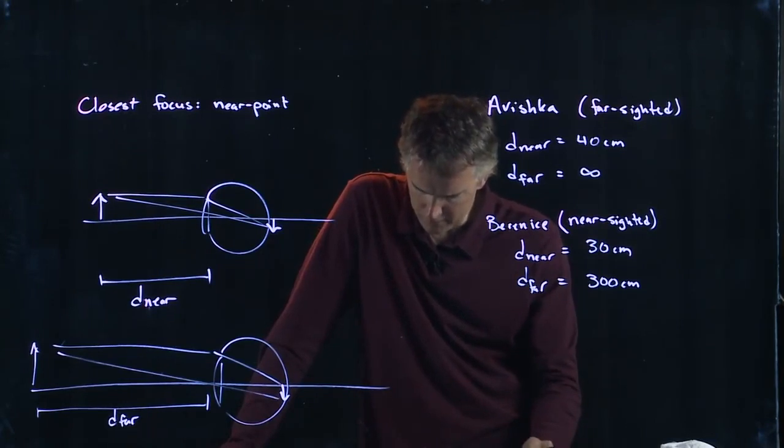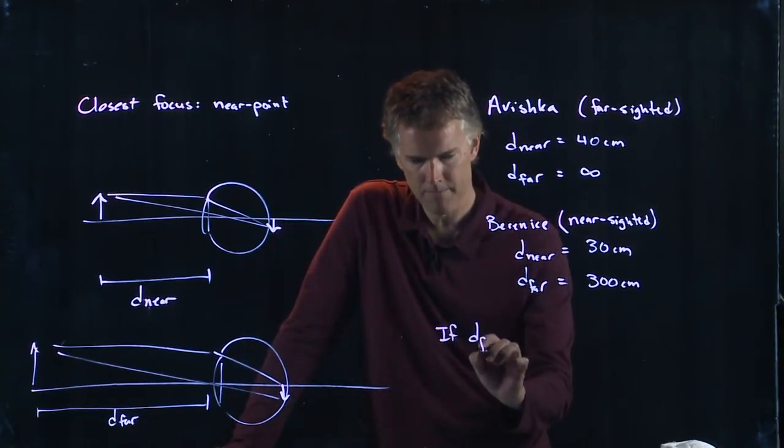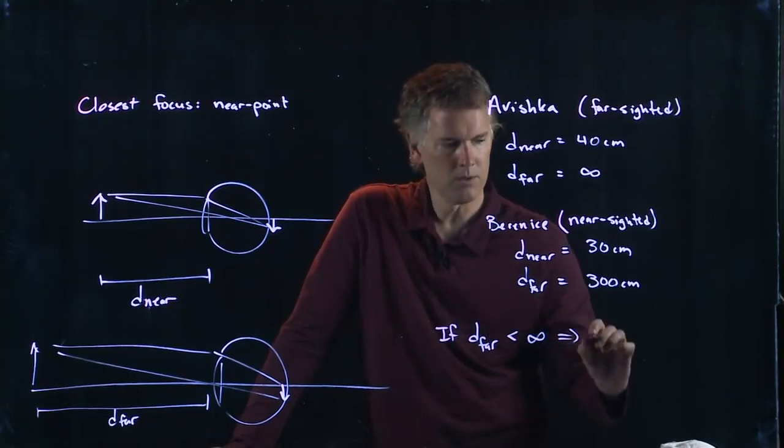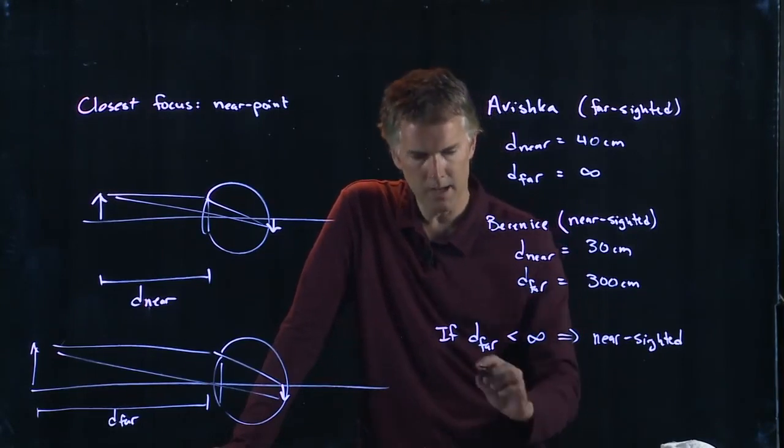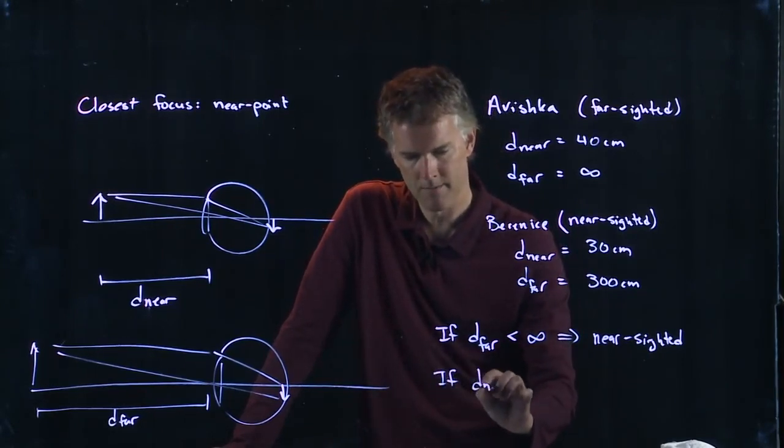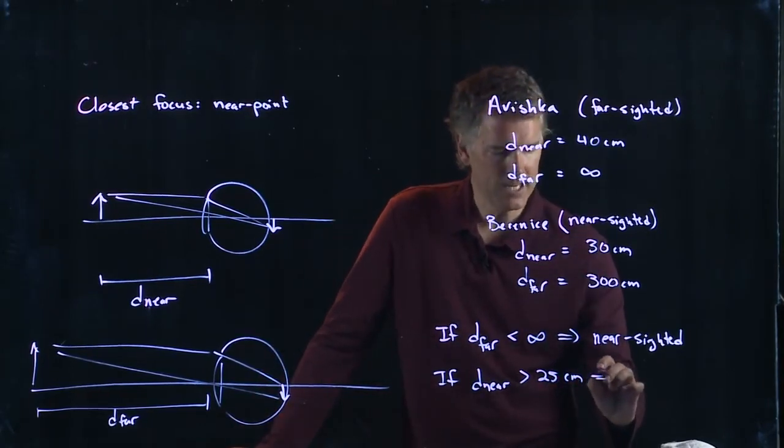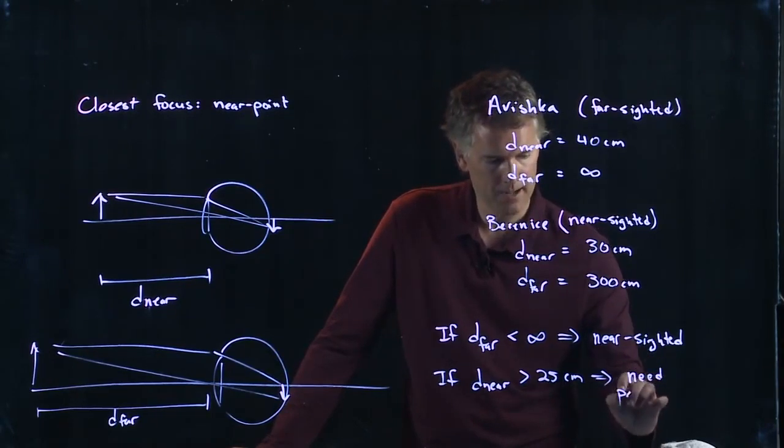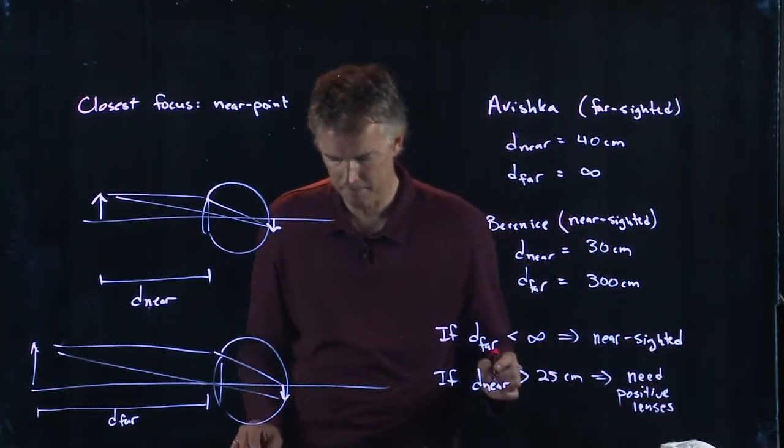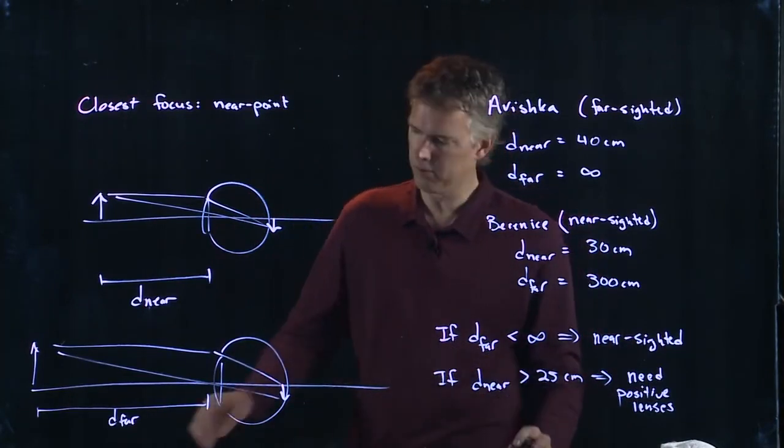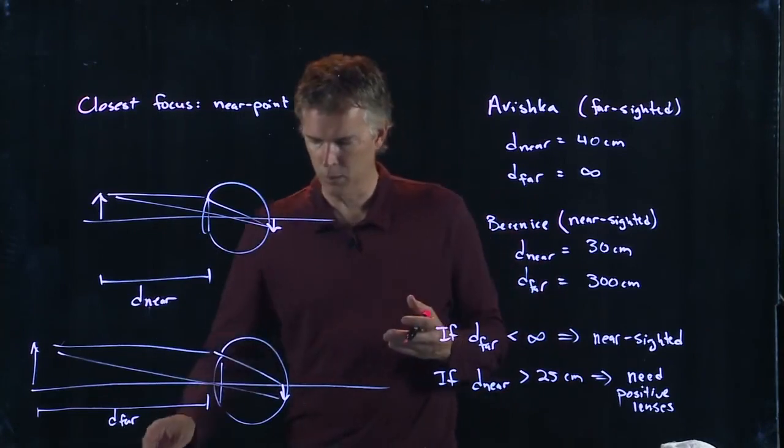And then there's a few more questions that continue. But basically, the idea is this. If D far is less than infinity, you are nearsighted. If D near is bigger than 25 centimeters, then you are going to need reading glasses or positive lenses. Positive is another word for converging lenses. And that 25 centimeters was solely picked basically on the length of your arm, as a comfortable reading distance, and so they picked 25 centimeters for that.